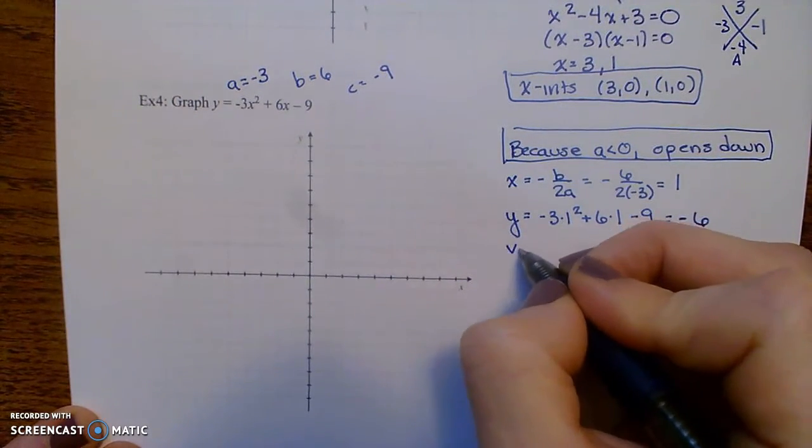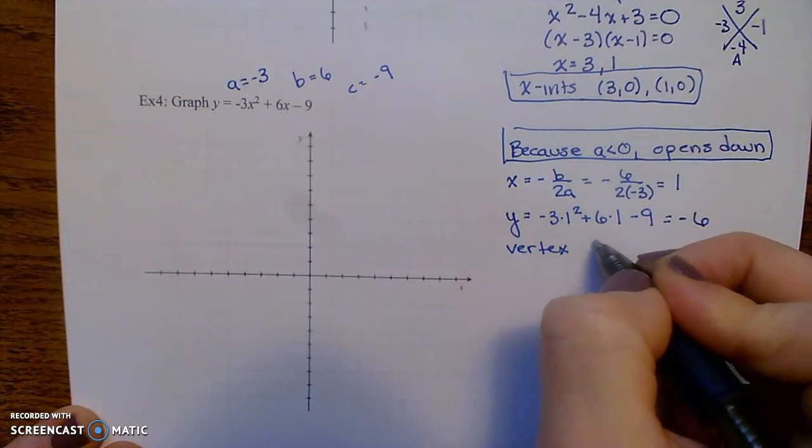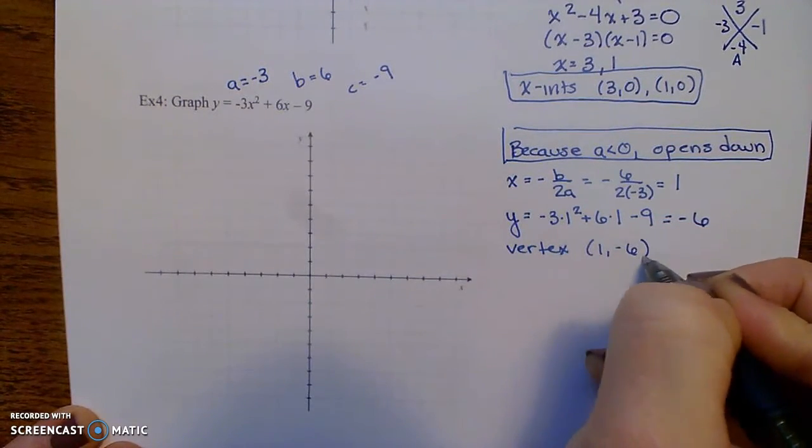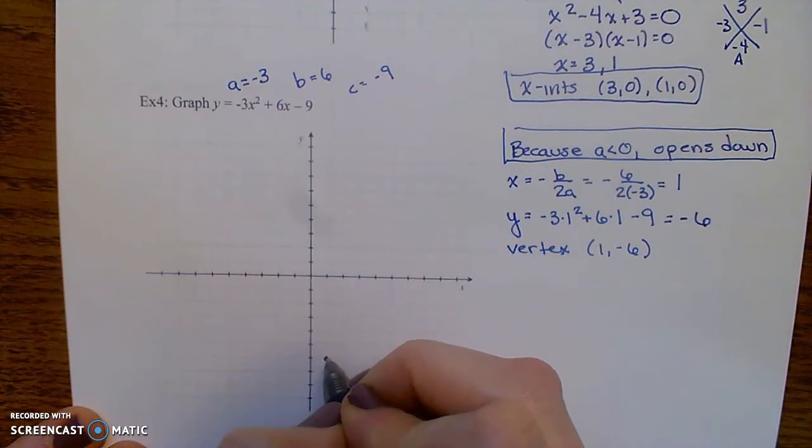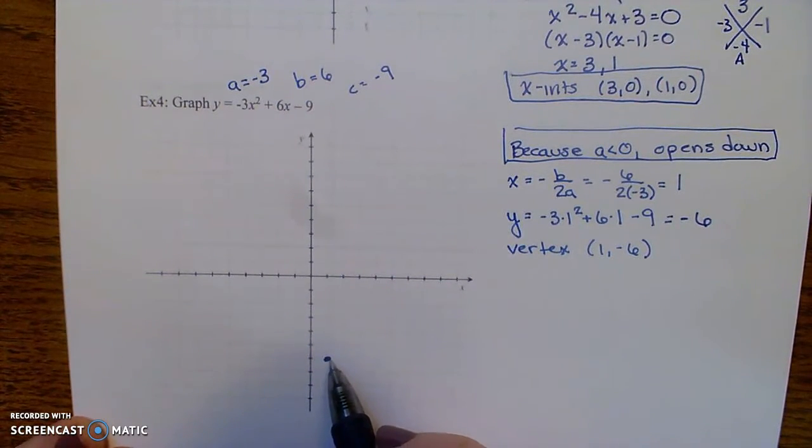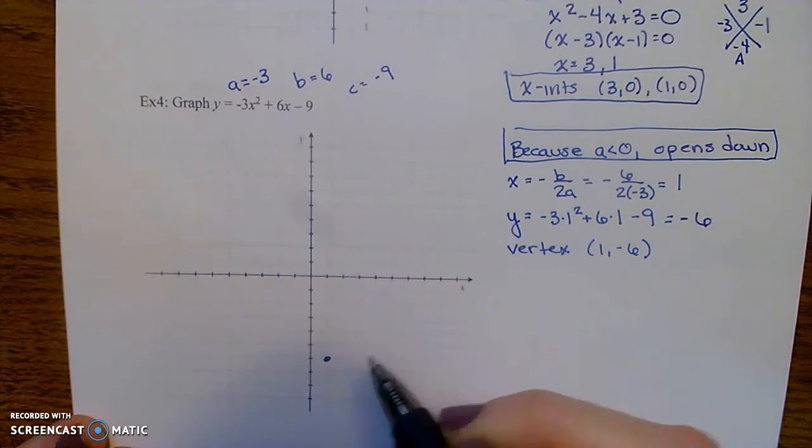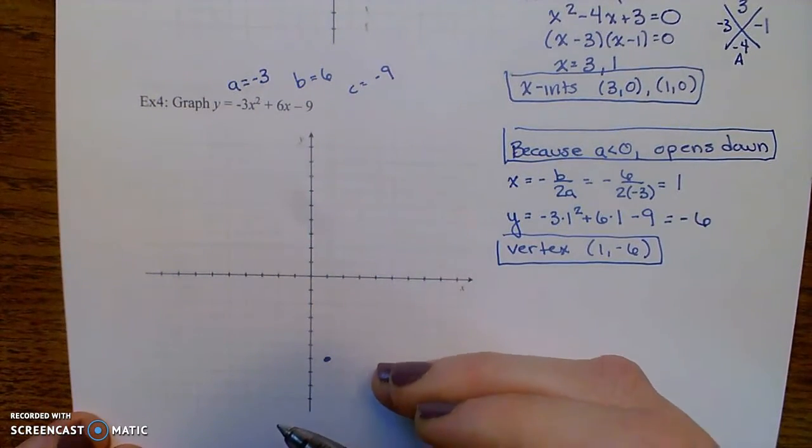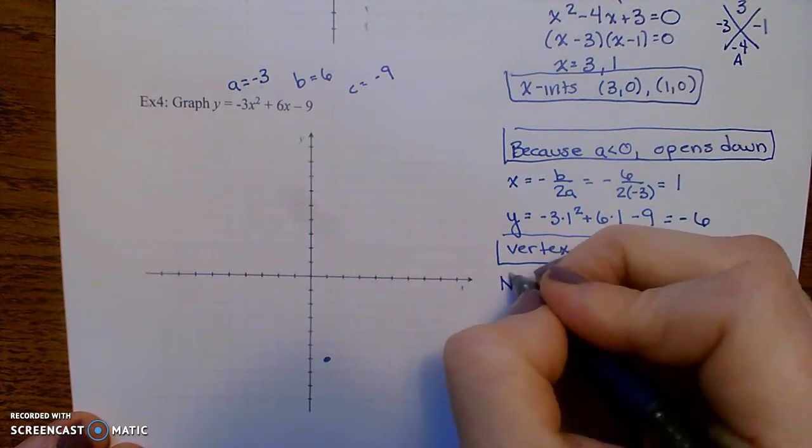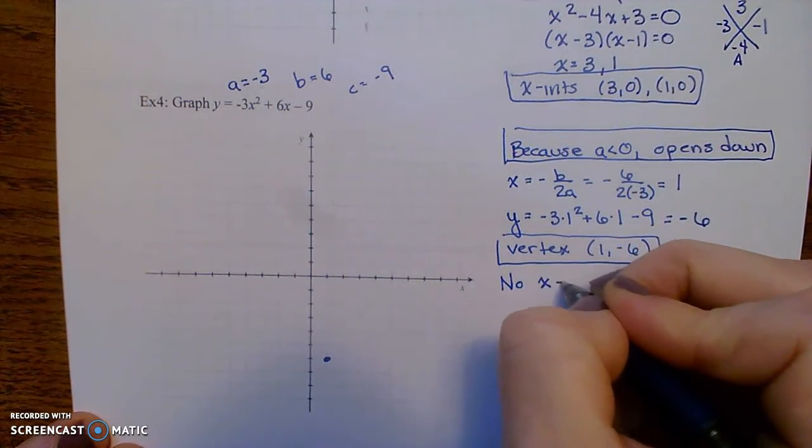So my vertex is 1 comma negative 6. So let's go ahead and plot that. So there's my vertex. Now, the parabola will open down. So because the vertex is below the x-axis and it opens down, I'm not going to have any x-intercepts.